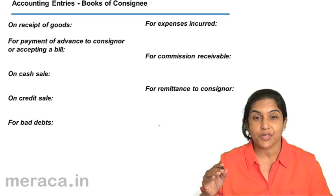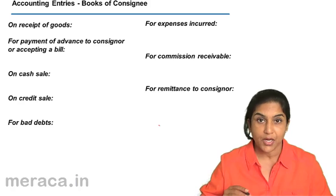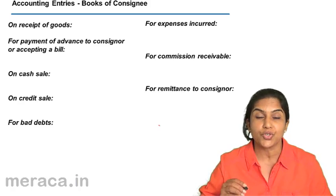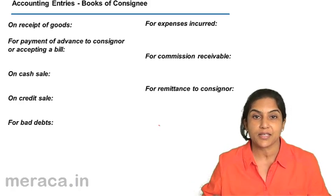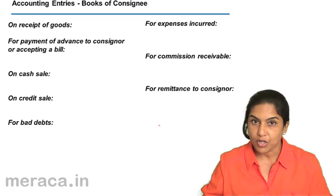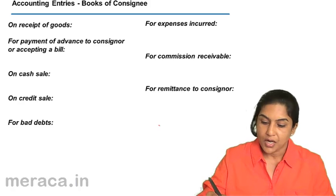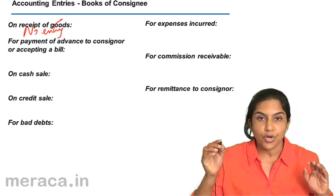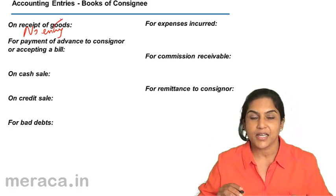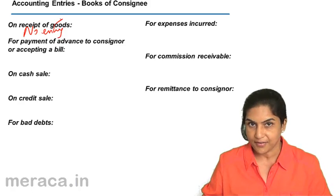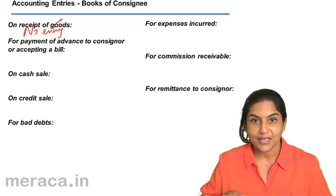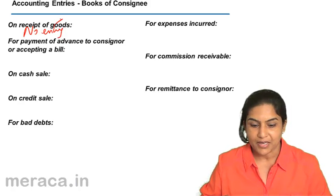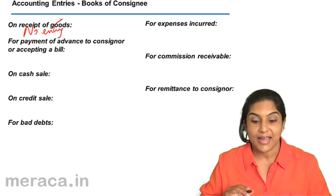If you remember, in the books of the consigner — in the books of Mukta — when goods were sent on consignment, the entry was consignment account debit to goods sent on consignment. We did not bring the consignee's account in. So here also, when the consignee receives the goods, there is no entry whatsoever. These goods do not belong to the consignee. The consignee is going to sell these goods only on behalf of the consigner. Ownership has not been transferred, and the consignee does not pass any entry.